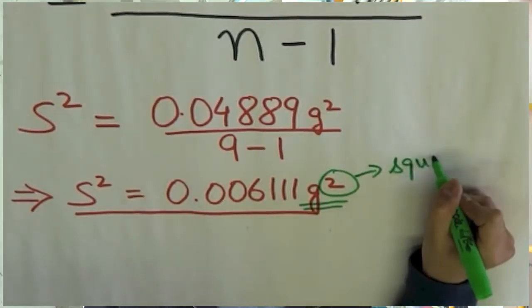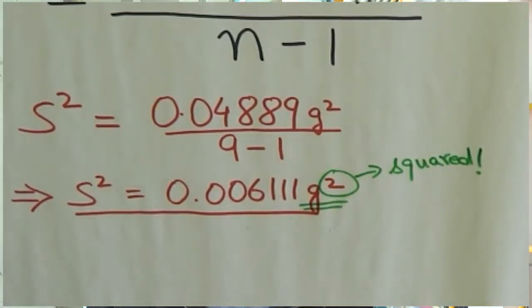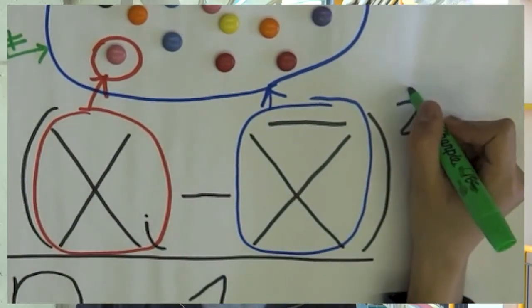Did you notice that the unit of sample variance and population variance is always squared? This is because the difference between the data point and the mean is squared. In order to represent the unit as originally seen as a data point and not a square, we can find standard deviation.